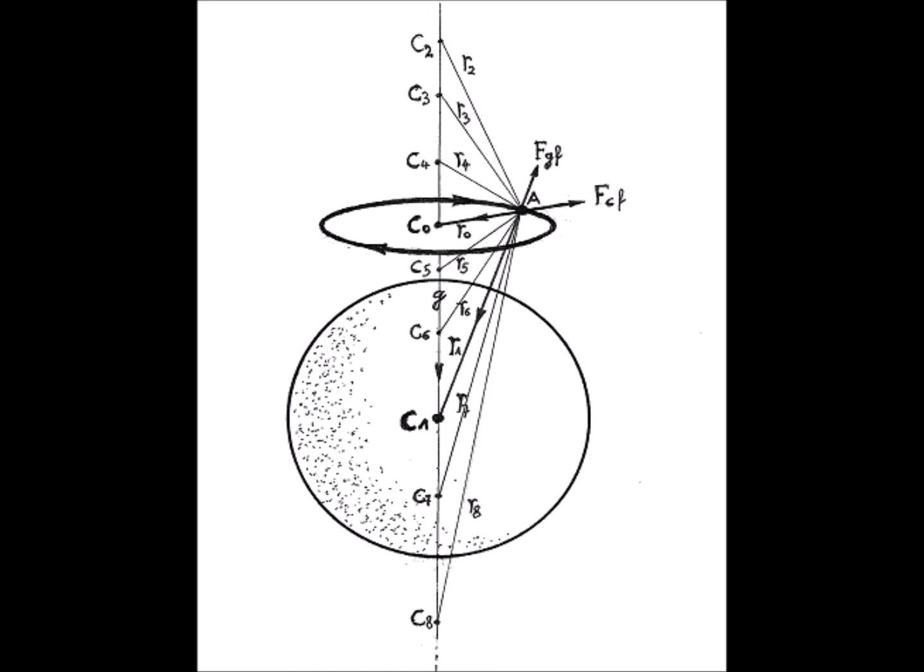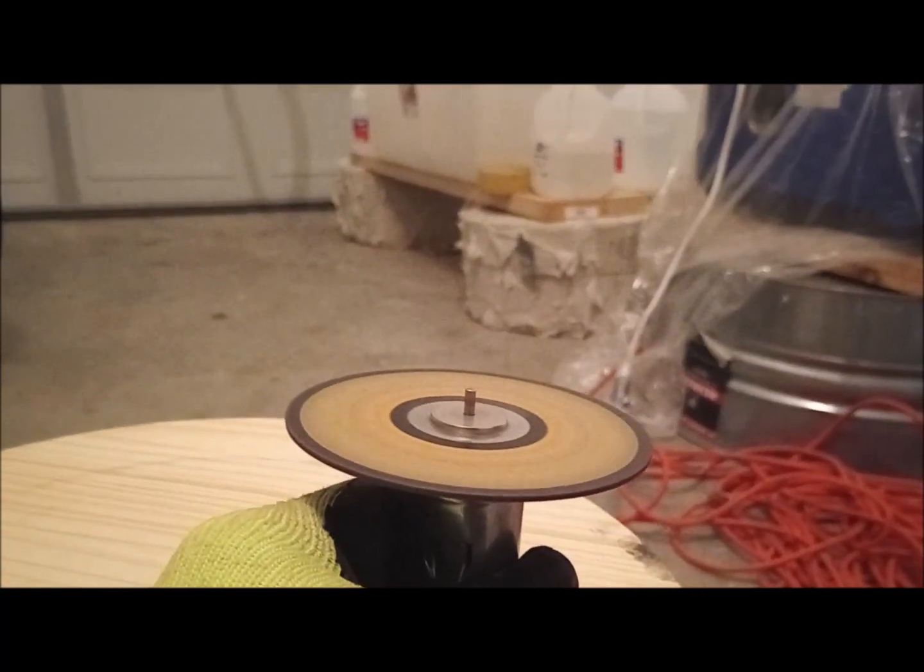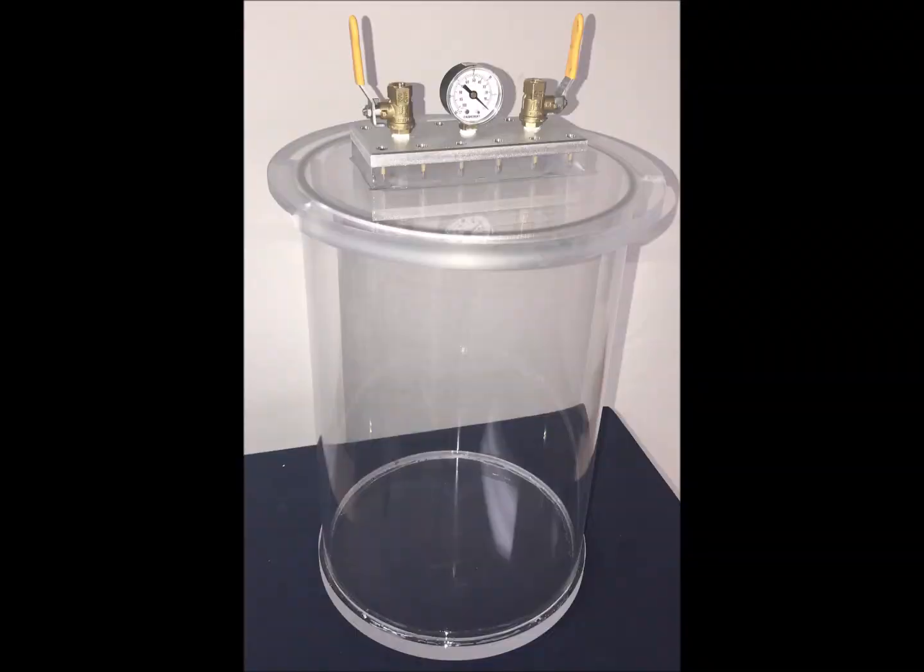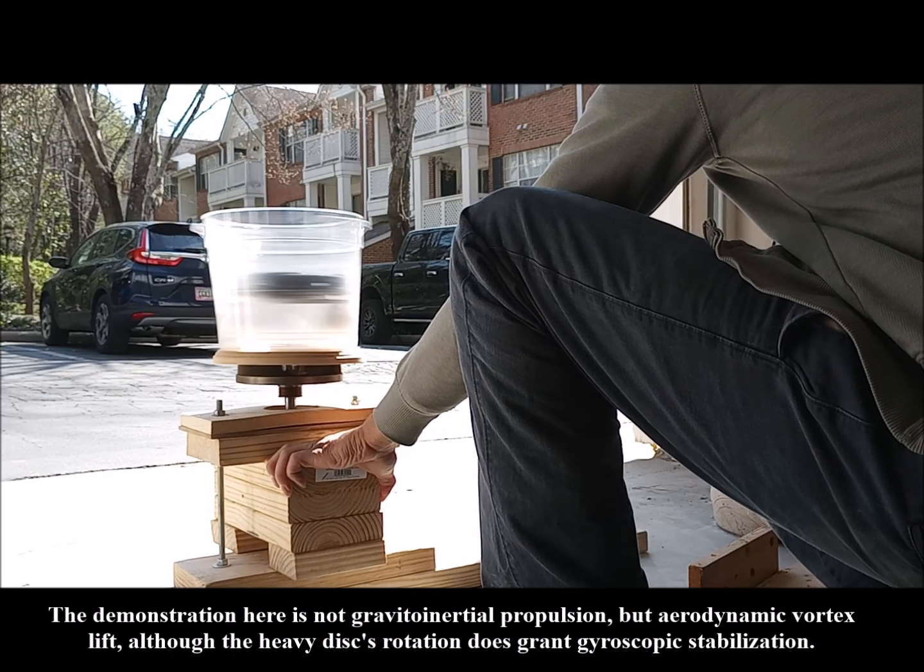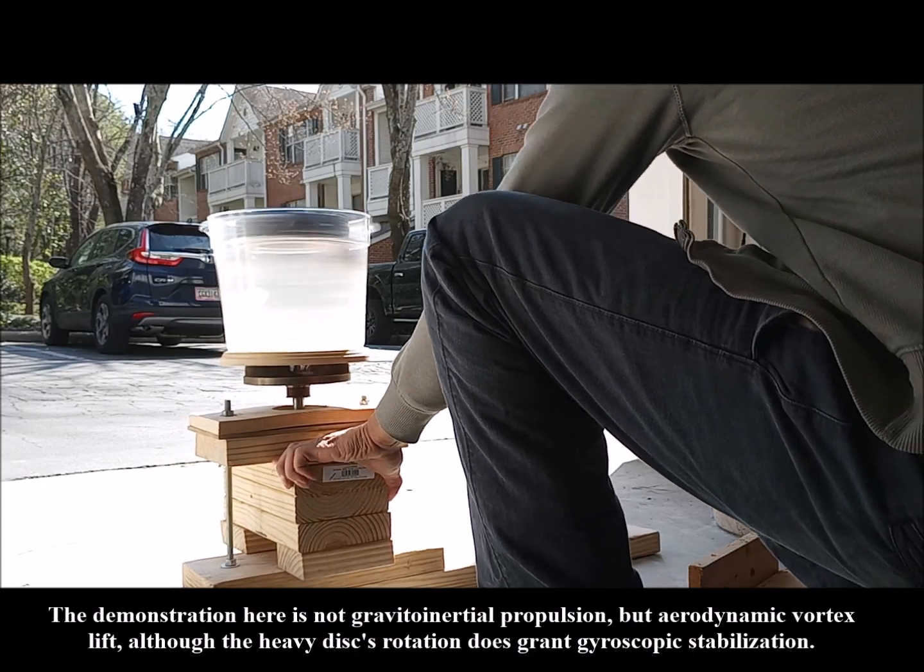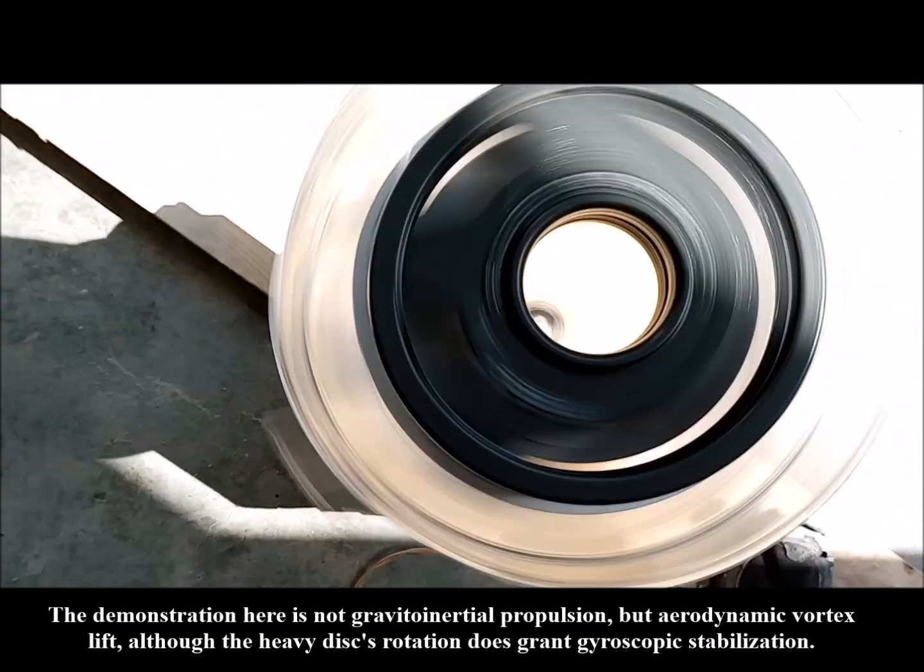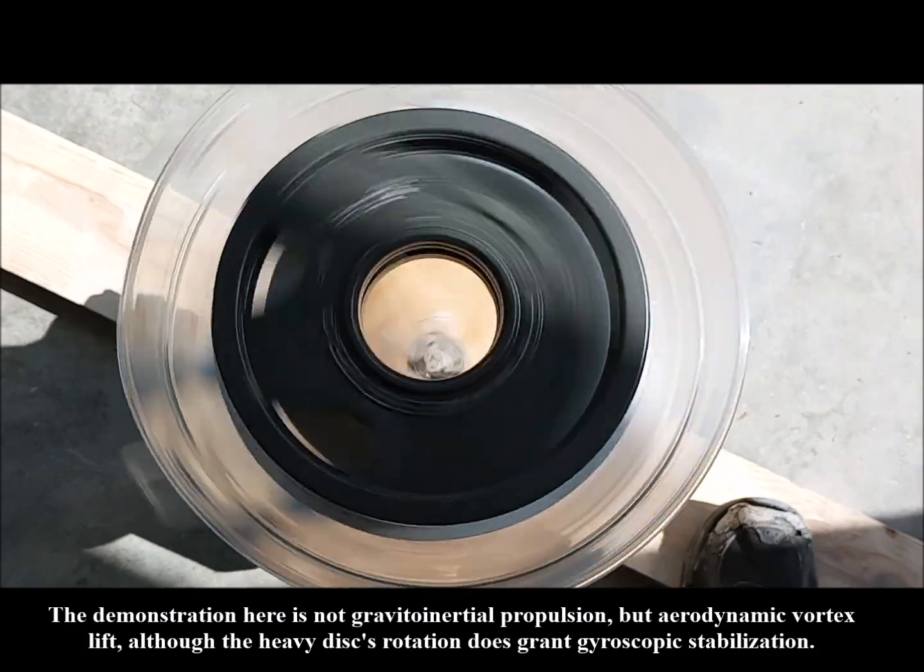This was just an introduction to the concept of the Gravifugal effect. In a follow-up video, I will attempt to test this concept as theorized by Otis T. Carr, using a rapidly rotating disk in a sensitive scale within a transparent testing chamber. A vacuum pump will be used to evacuate the chamber such that, unlike in the previous Vortex lift videos, air will play no role in any achieved weight reduction or lift. So a follow-up video will keep in touch soon. And as always, stay tuned.